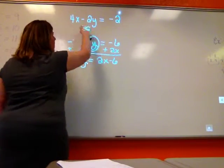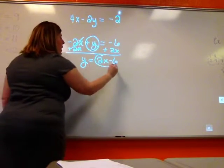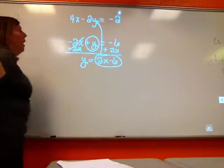So I've got y equals 2x minus 6, and 4x minus 2y equals negative 2. I'm going to take my 2x minus 6 and replace it right there for y.